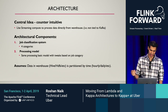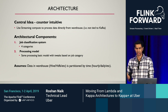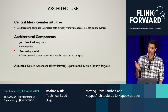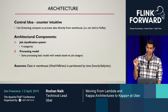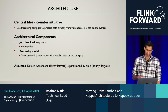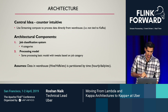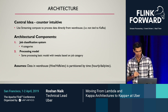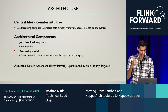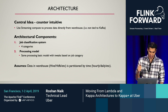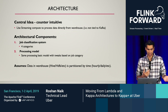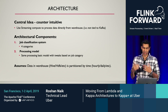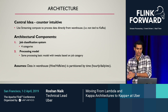Coming to the architecture — the core idea is a little counter-intuitive: we are employing streaming compute for offline data processing directly from the warehouse, so we are not tied to Kafka, but we can reuse streaming compute for both online and offline. There are two architectural components: a job classification system and a processing model.